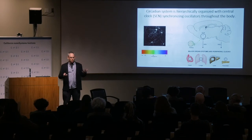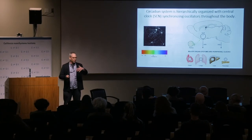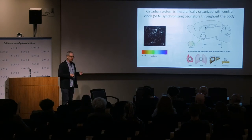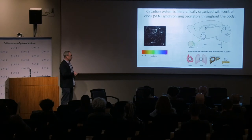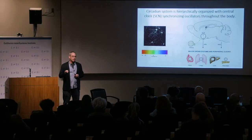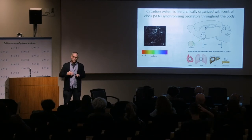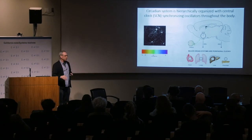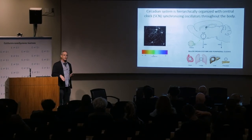The set of genes controlled in your heart are different than those in your liver or in your skin. This system gives a lot of flexibility, but it's also sensitive to perturbations — like working inappropriate shifts or jet travel. If you've experienced jet lag, you know exactly what it means to have your circadian system disrupted.